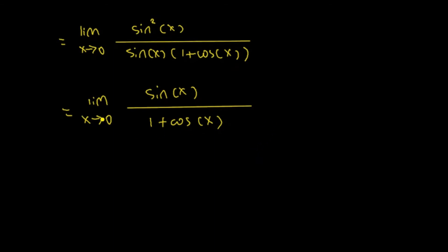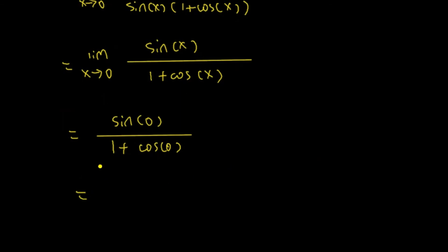Can you put 0 into x now? Yes, you can. So we put sine 0, all divided by 1 plus cosine 0. We know that sine 0 is 0, cosine 0 is 1. So 1 plus 1, we have 0 over 2, which is 0. At least, that's the proper answer we're looking for.